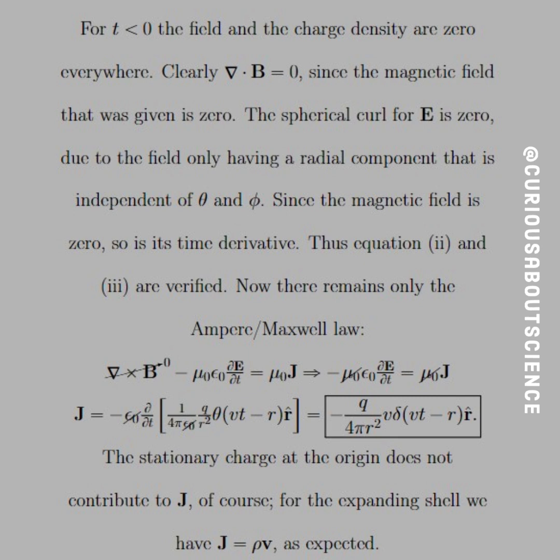We're just here to solve, take the derivative of the electric field with respect to time. We see that we get a cancellation of epsilon naughts again, and we see that we get a negative. Recall the negative, we get a negative from the law, and then we get negative q over 4π r squared, v with the Dirac delta in the r hat direction. And what this says is the stationary charge at the origin does not contribute to J. Makes sense. Of course, for the expanding shell, because you need to have something that's moving for there to be a current, and we have J is equal to rho v, which is as expected. That's pretty cool. I love how consistent it is.